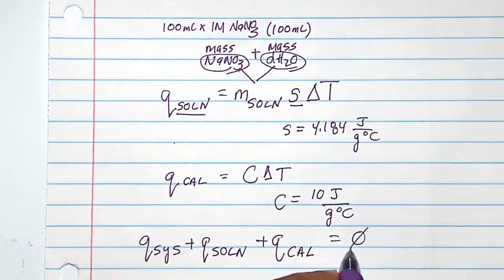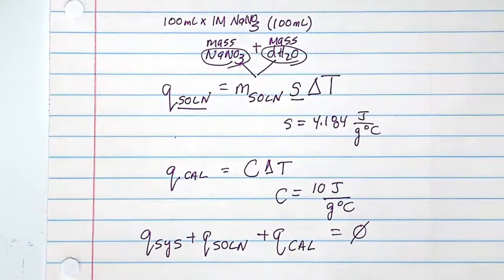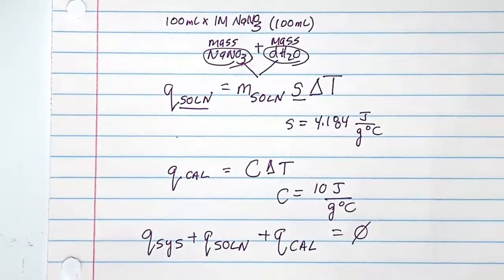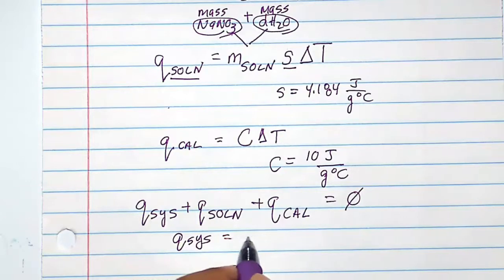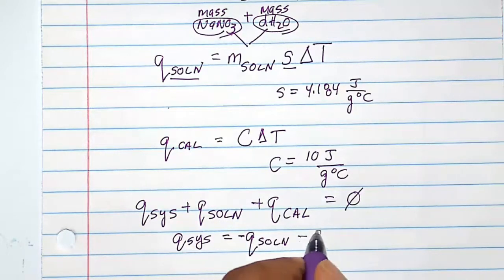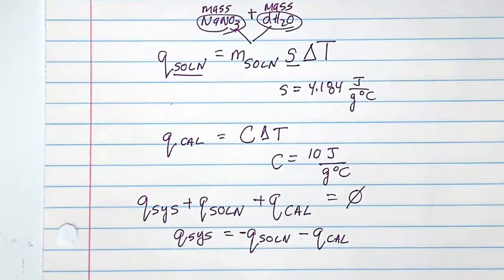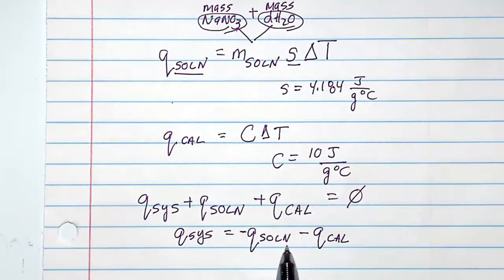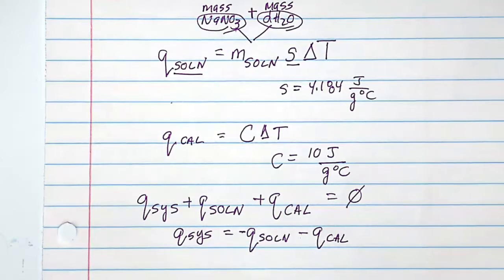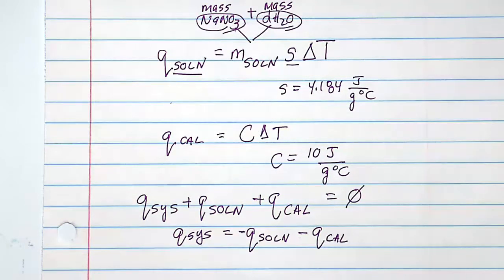It is these two heats that you use to determine the heat of the reaction. The heat of the system plus the heat of the solution plus the heat of the calorimeter must all equal zero — that's simply the law of conservation of energy. So Q of the system equals negative Q_solution minus Q_calorimeter. The signage will tell you whether the temperature went up or down, which determines the sign of your heat.